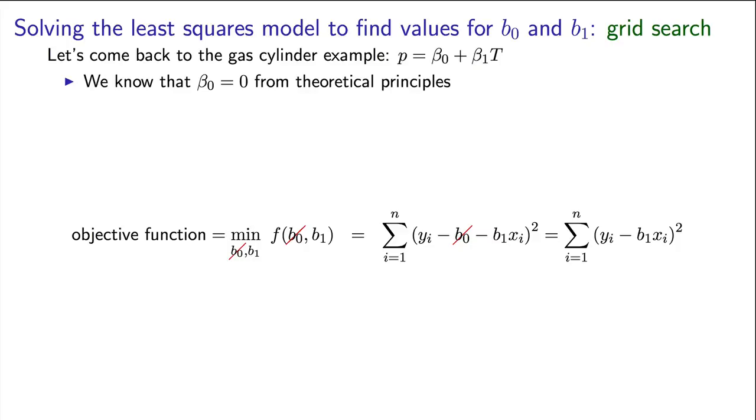When the temperature is zero Kelvin, there's no pressure. How can we find beta1 in the context of this example of solving an optimization problem?